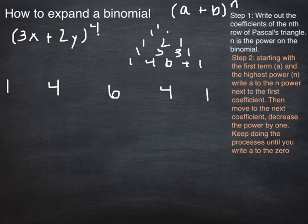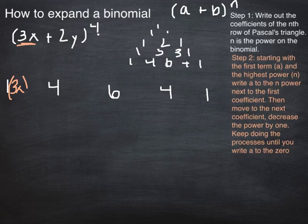Alright, step 2. It's a little bit long in words, but it's not too hard of a process. You're going to take a look at your A term. So in our case, it's 3x. And you're going to start by writing that term 3x, and then you're going to write it to the highest power, 4.